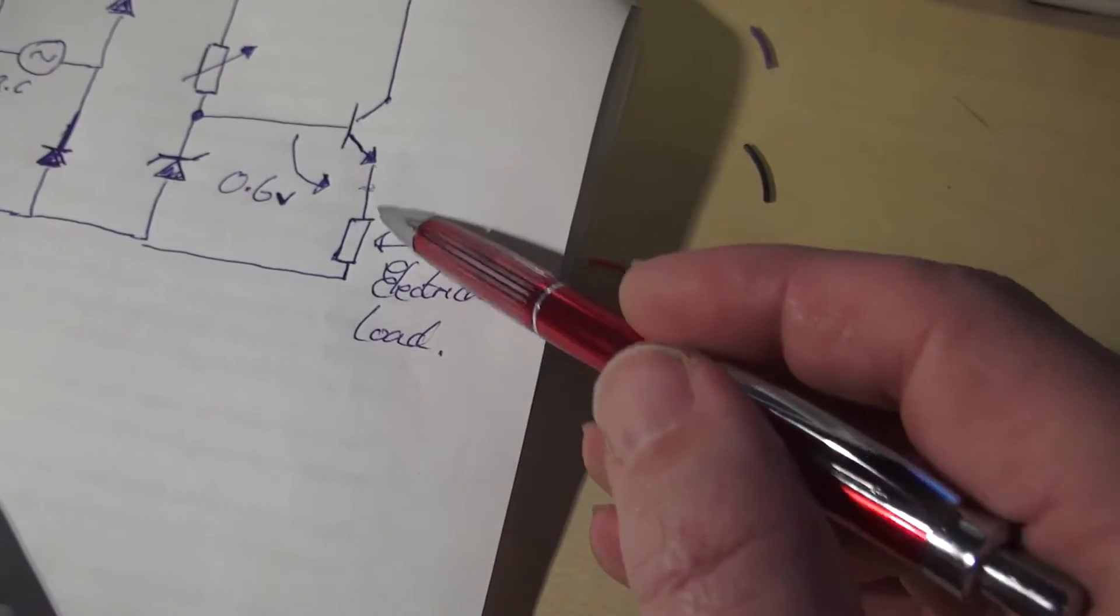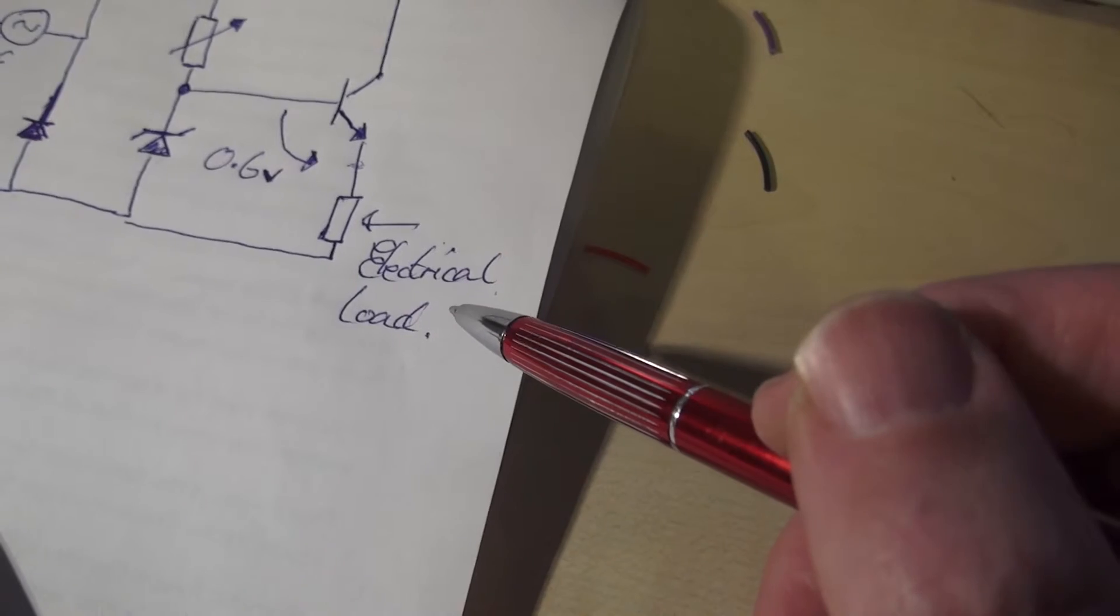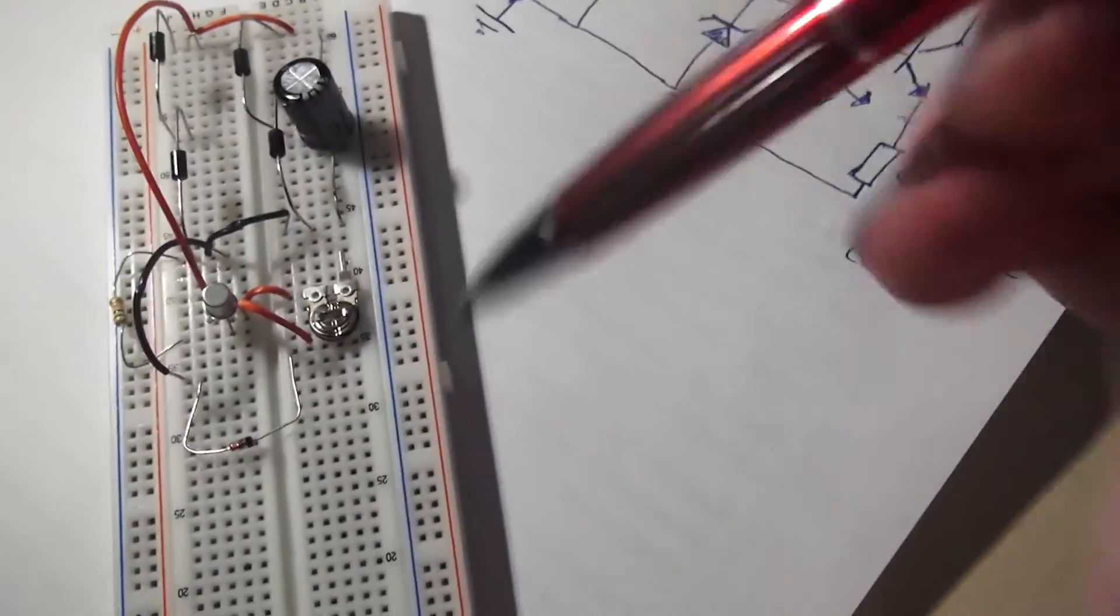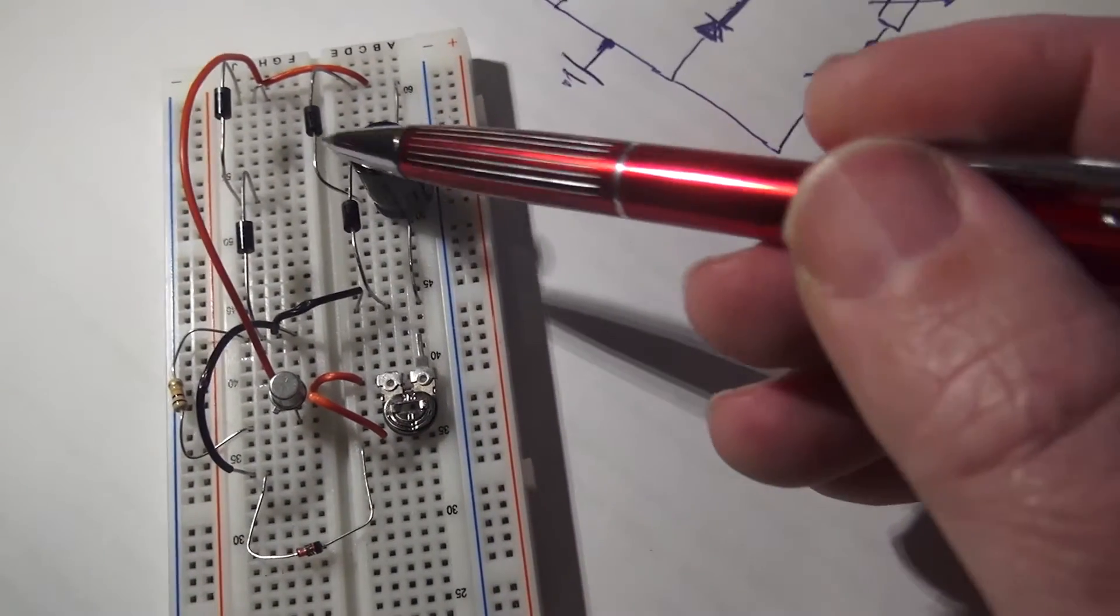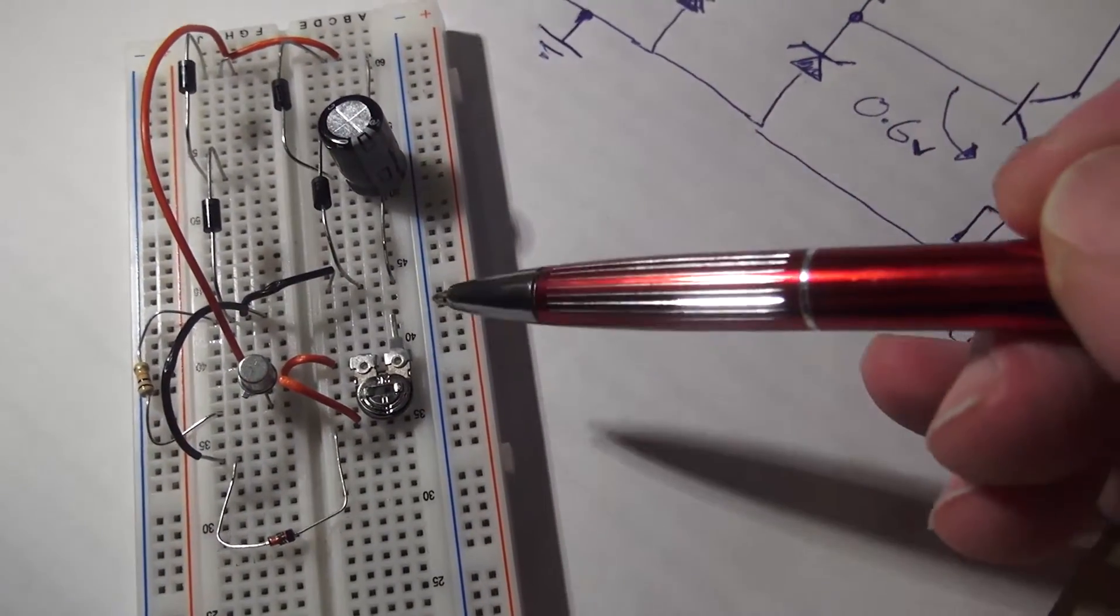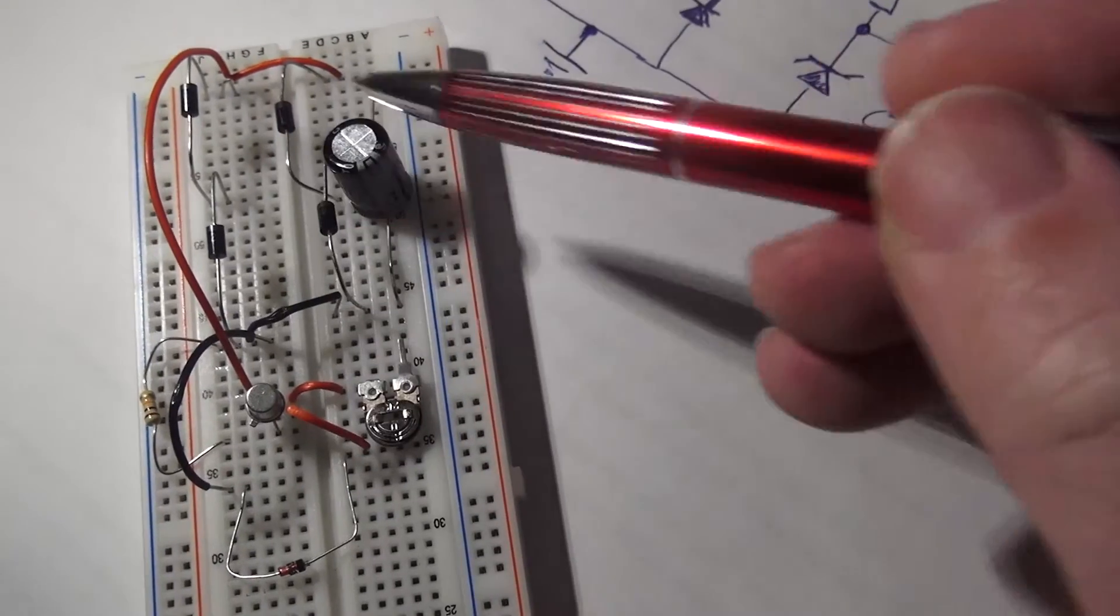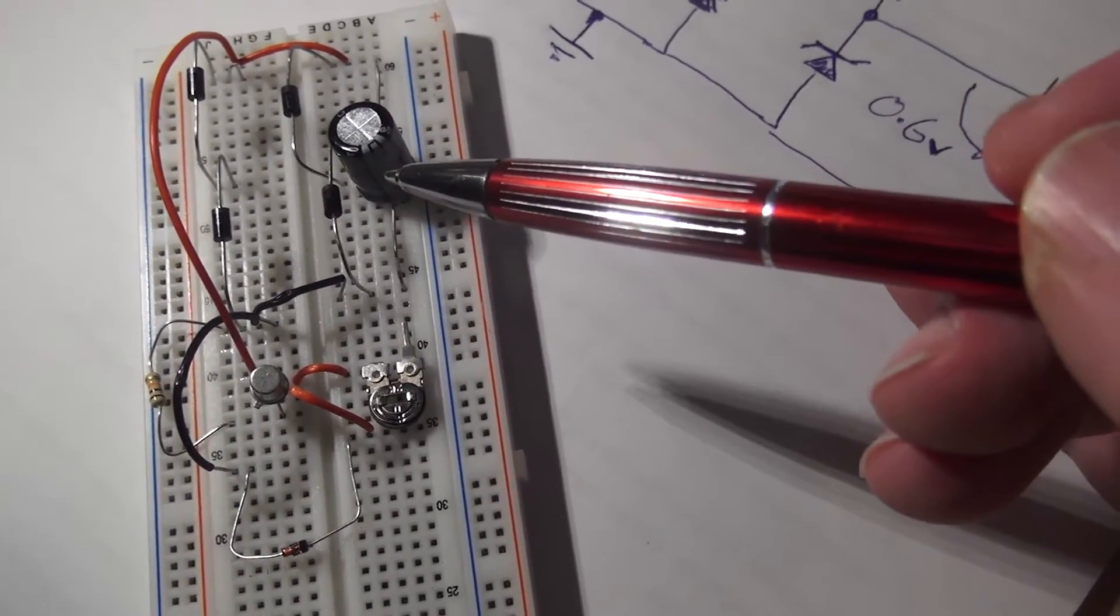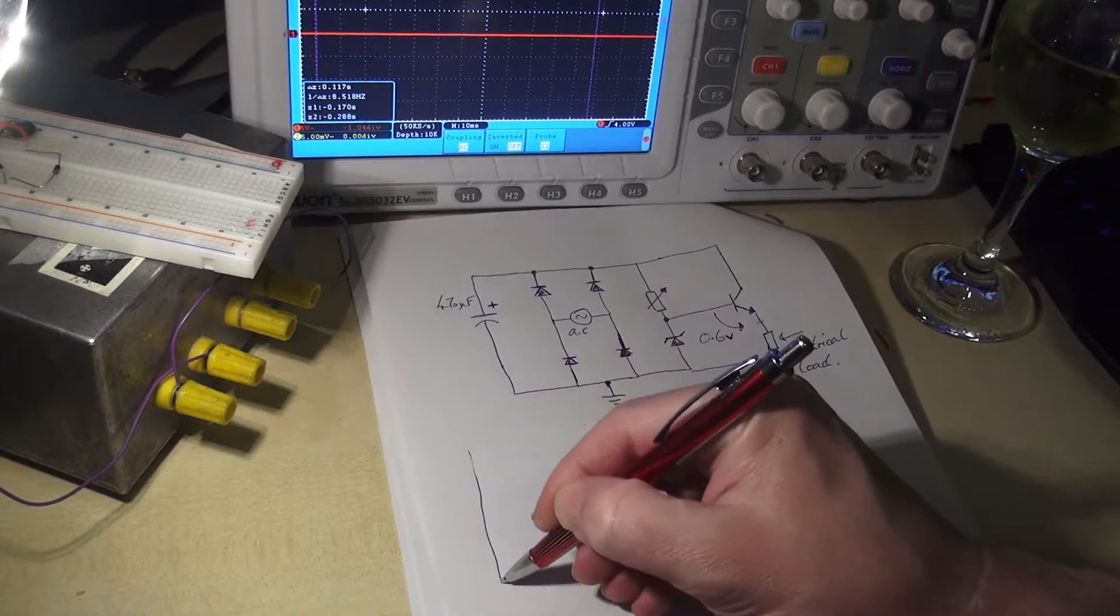So in a real circuit, that would be whatever it is you're trying to power with your regulator. Even in a close-up like this, it's extremely difficult to show all of the detail in this circuit. You need to get used to tracing schematics and building circuits from them. But that's for another video. Let's do the explanation now.